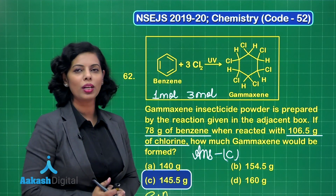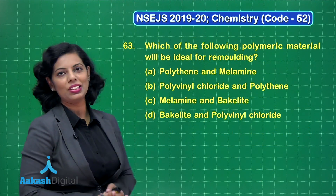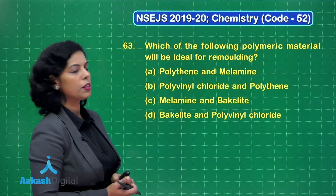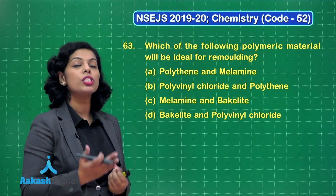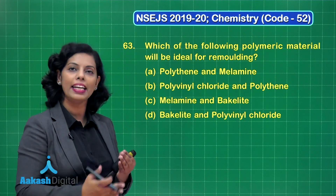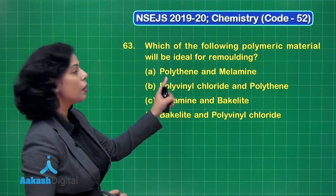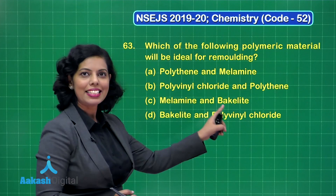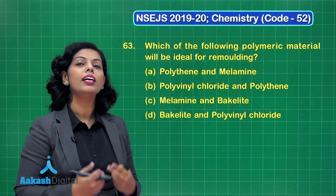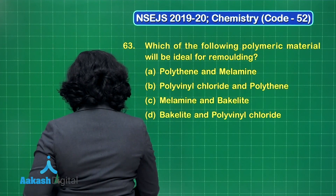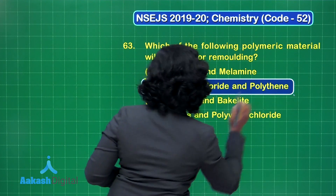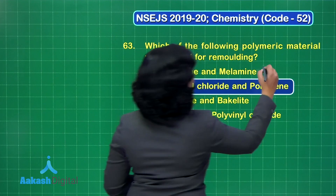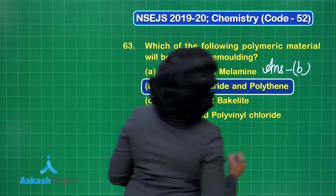I hope question 62 is also clear. The turn is for question number 63: which of the following polymeric materials will be ideal for remolding? Remolding can be done for thermoplastic materials, which can be molded by heating. Polythene and polyvinyl chloride are thermoplastics, while melamine and bakelite are thermosetting plastics. So we can neglect options with thermosetting plastics. The correct answer for question 63 is option B.